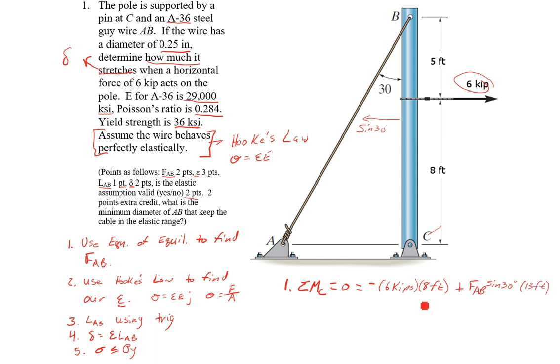Rearranging that we get FAB equals 48 kip feet over 13 feet times sine of 30.